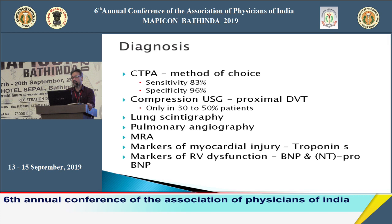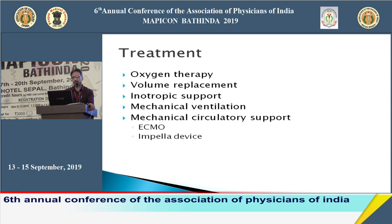DVT is seen in only up to 50 percent of pulmonary embolism patients. Lung perfusion scan is not widely available. Pulmonary angiography is no longer the investigation of choice. MR angiography also fails to reliably detect pulmonary thrombus. Troponins, BNP, and NT-proBNP are elevated but do not lead to the diagnosis. General management includes treatment of hypotension, hypoxia, oxygen therapy, fluid replacement, and ionotropic support.